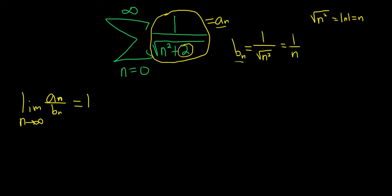So this is equal to the limit as n goes to infinity. Our a sub n is 1 over the square root of n squared plus 2. And then we're dividing by b sub n, that's the same thing as multiplying by the reciprocal. So times, the reciprocal of b sub n is n over 1.